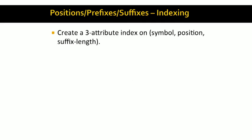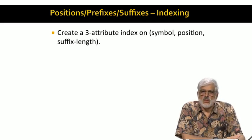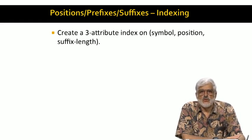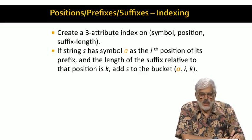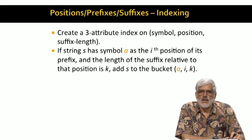We now build an index where the keys are triples consisting of a symbol, a position holding that symbol, and a suffix length. For each such triple, there is a bucket, and we put into the bucket A, I, K. Those strings S that have symbol A in position I, and I is a position in the prefix of S, and the length of the portion of the string after position I, that is the suffix, is K.